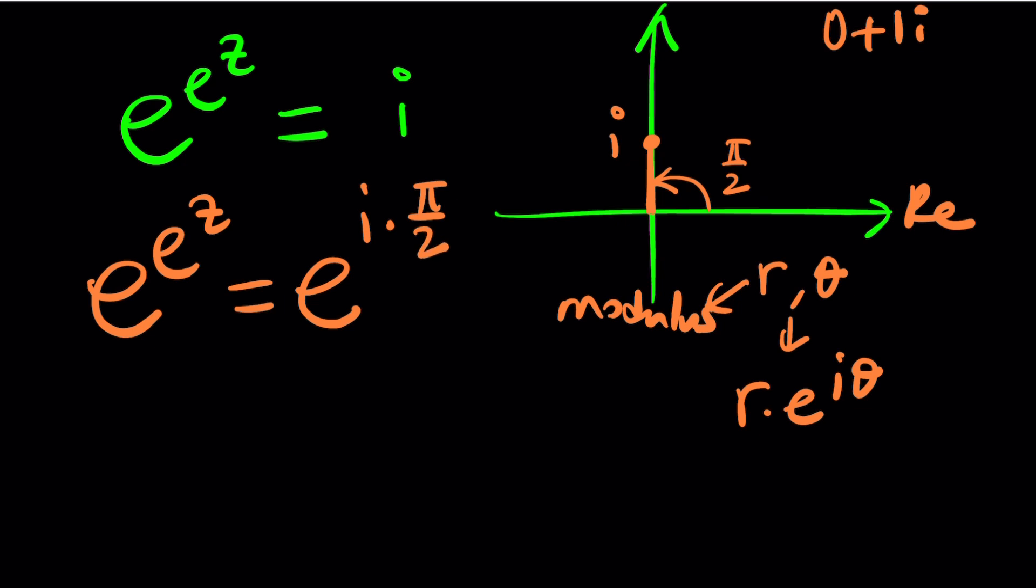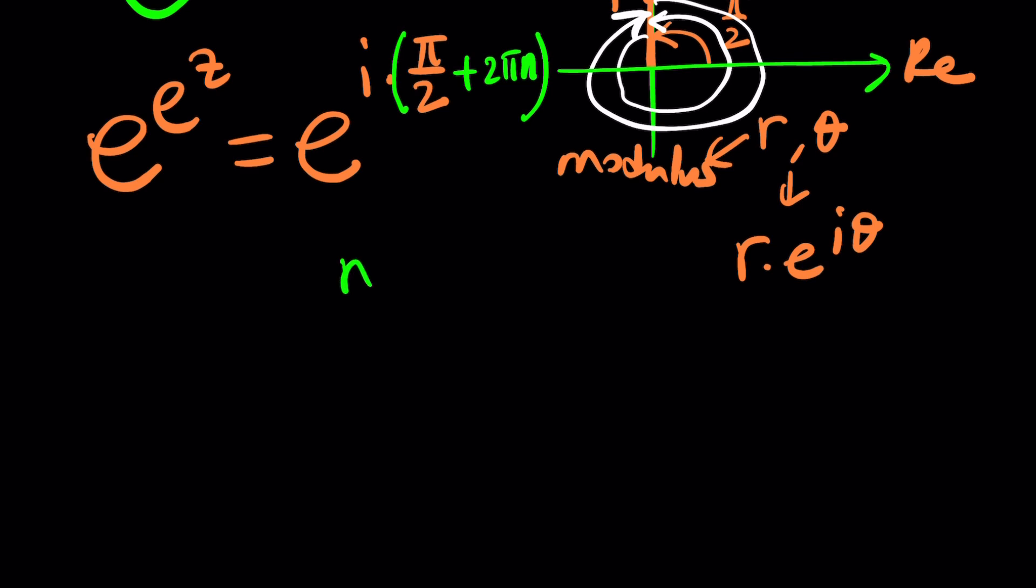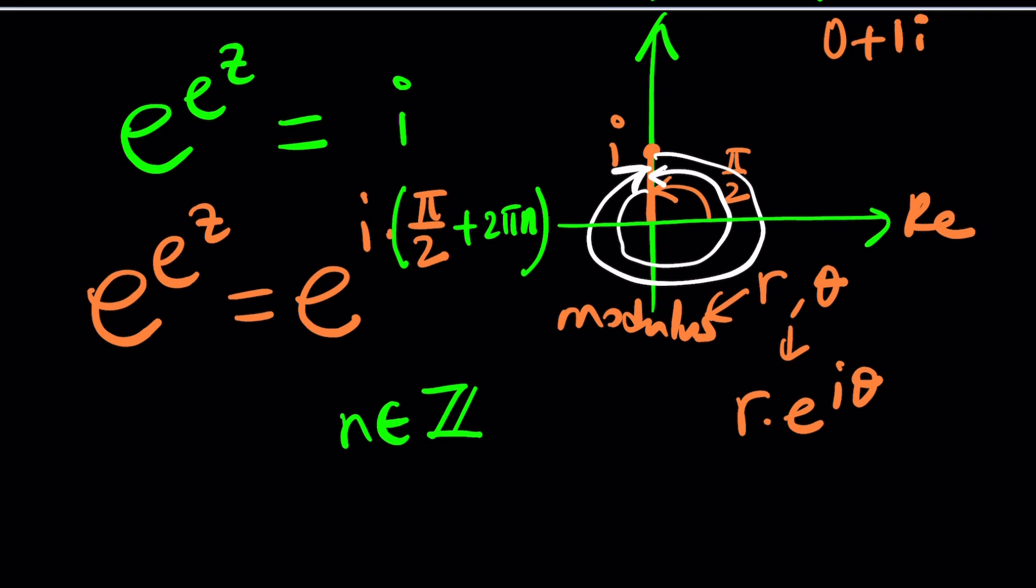But π over 2 is not the only way to write it. You know why? Because if you just add 2π to this, you're going to get to the same point. Or if you subtract 2π from it, you're going to get to the same point. You can do this multiple times, which means you're allowed to add multiples of 2π. So we're allowed to add 2πn, which is multiples of 2π to this. But in this case, n needs to be an integer. Z for Zalen, right? I think it comes from German.